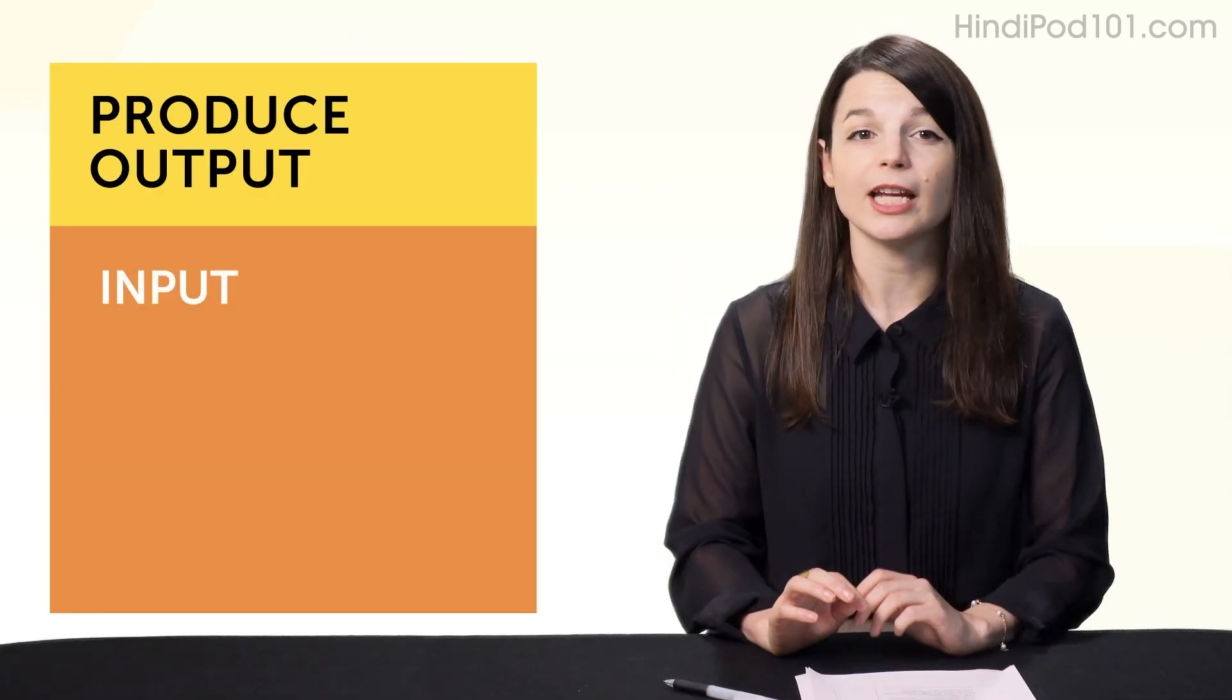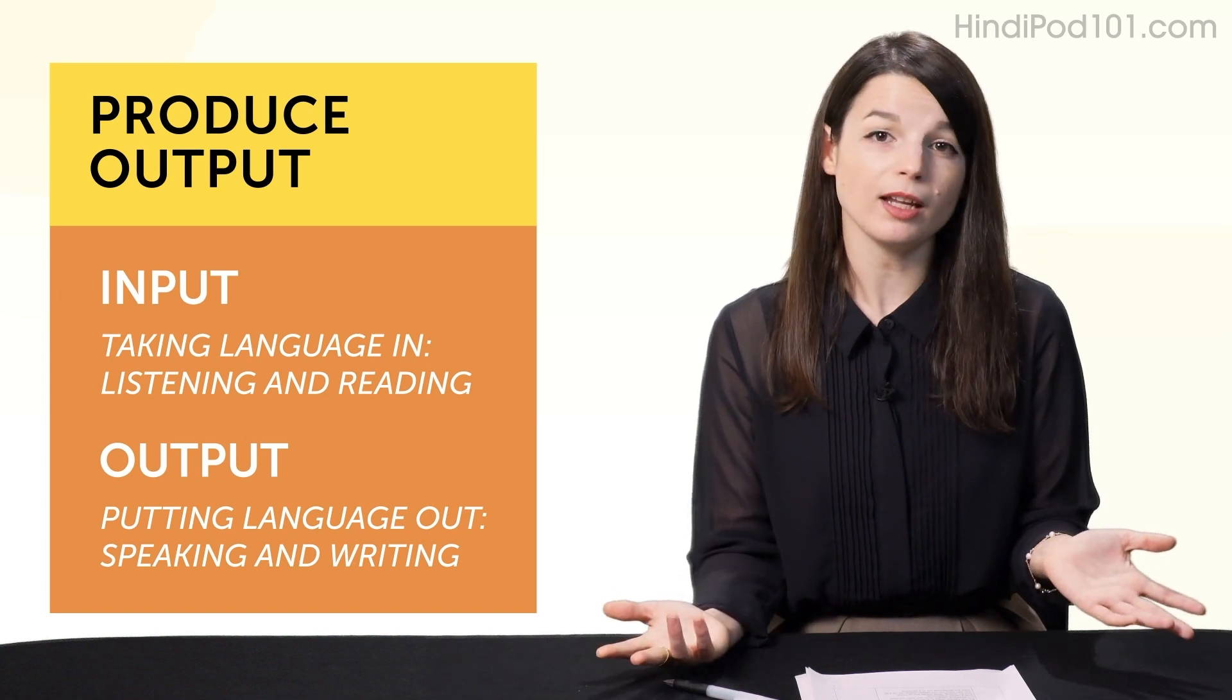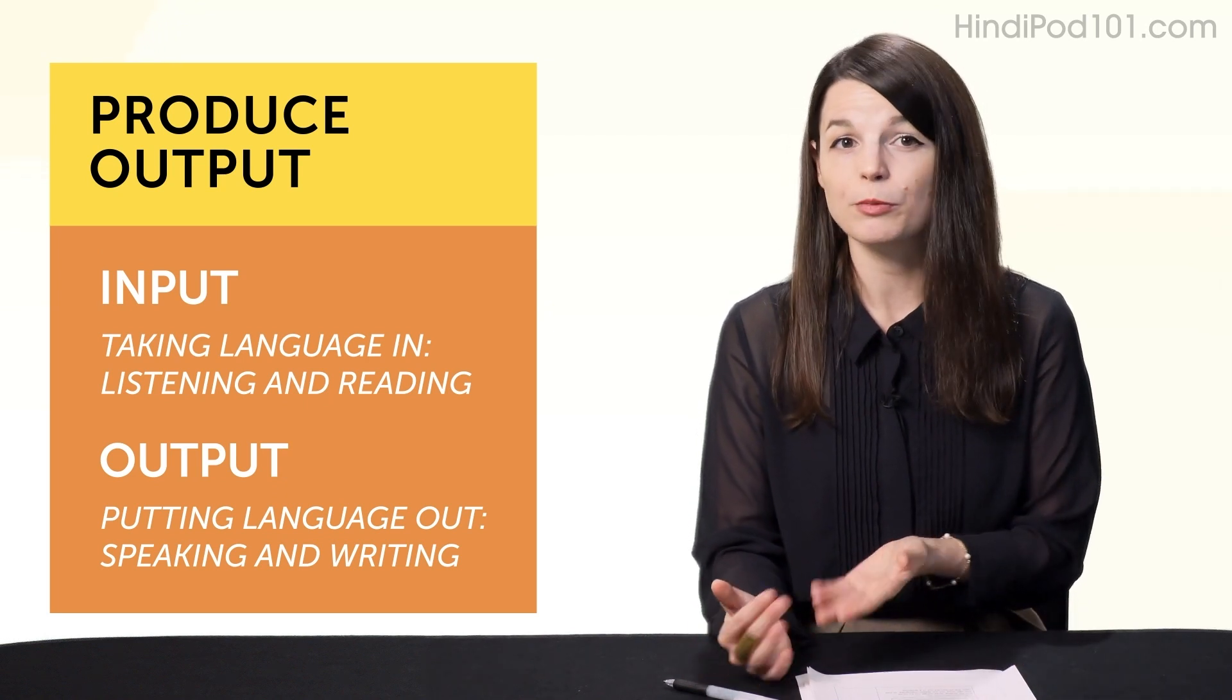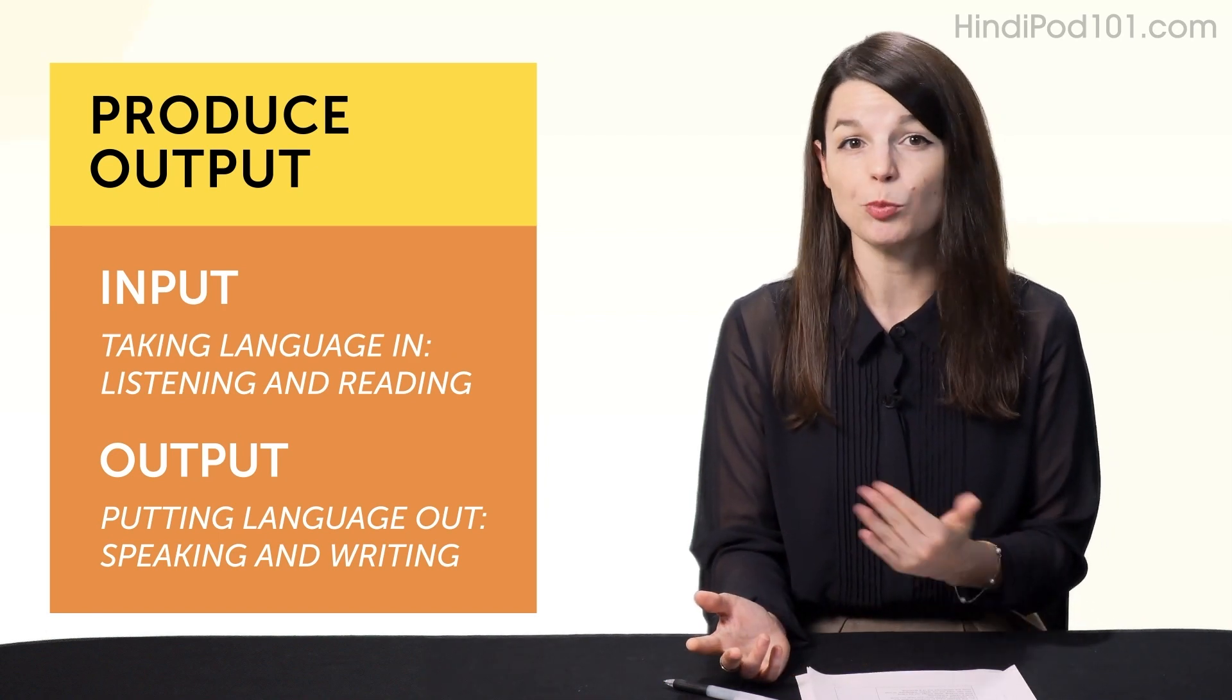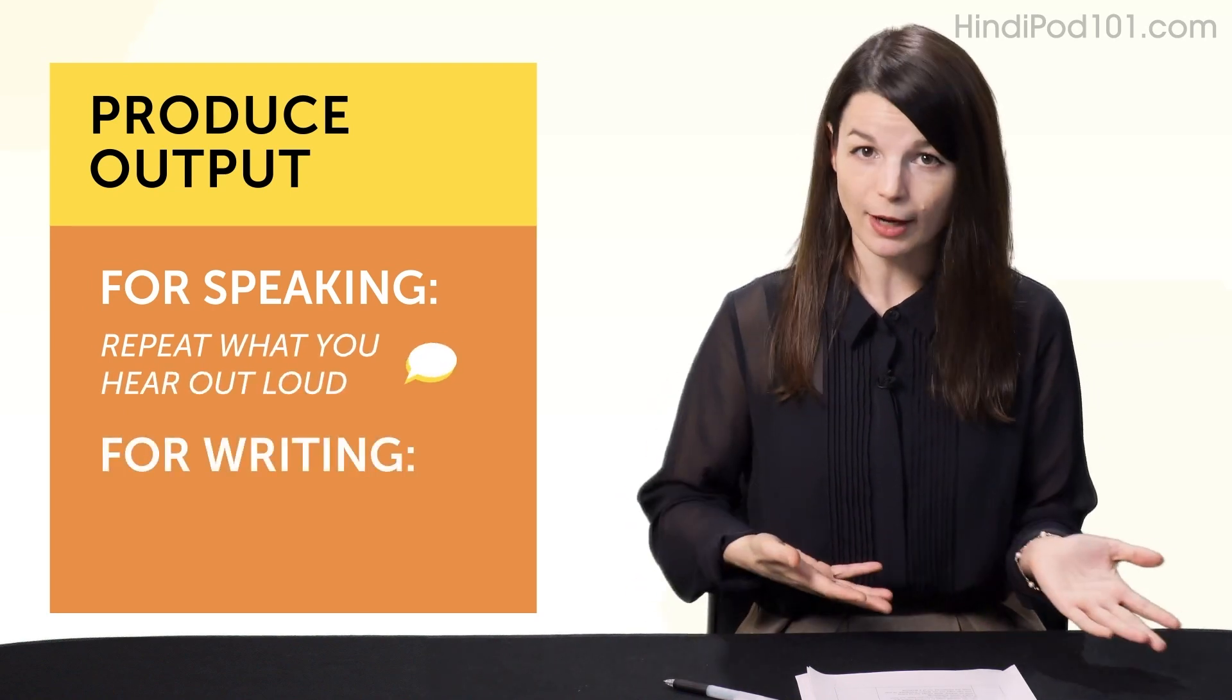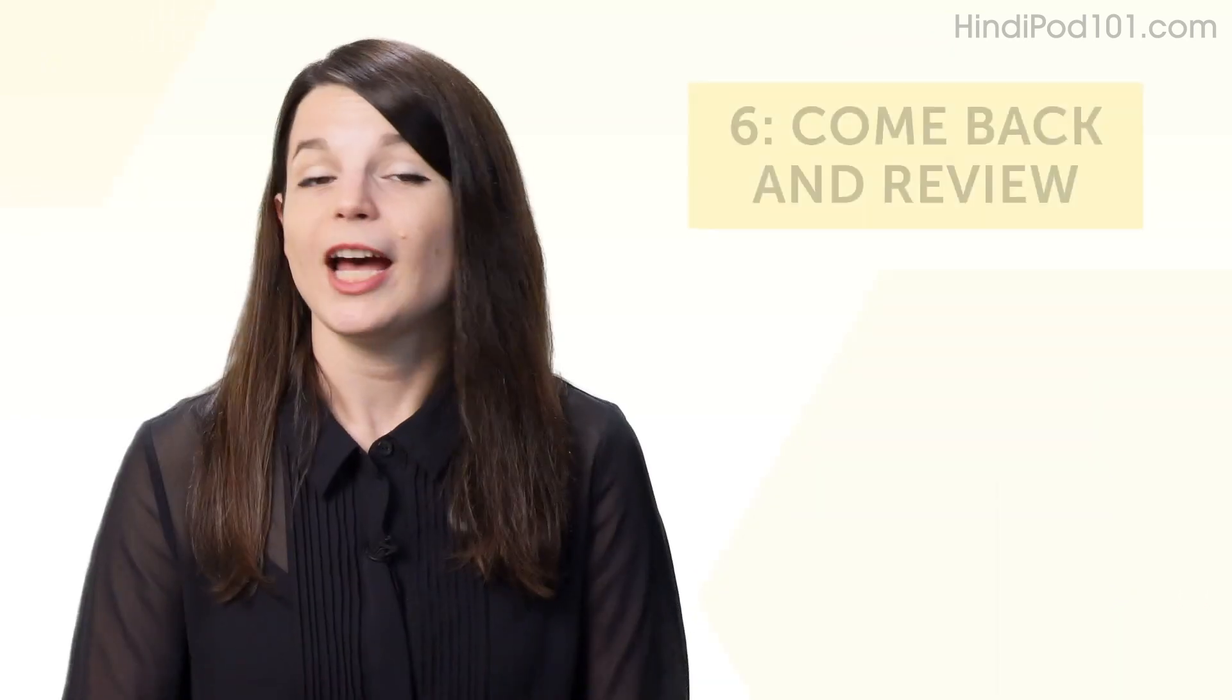Habit number five, get into the habit of producing output. So, input is taking language in, listening and reading. And output is putting language out. So, speaking and writing. The point here is, it's easy to just sit and listen and watch YouTube videos. You can listen to lessons all day long, but listening helps with listening. It won't get you speaking the language. So, the easiest ways to produce output are, for speaking, repeat what you hear out loud. That's called shadowing. And for writing, write things out by hand. You can copy out our lesson dialogues or just copy the sentences out of a textbook.